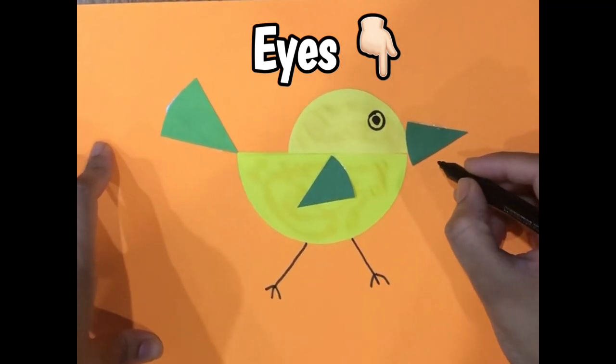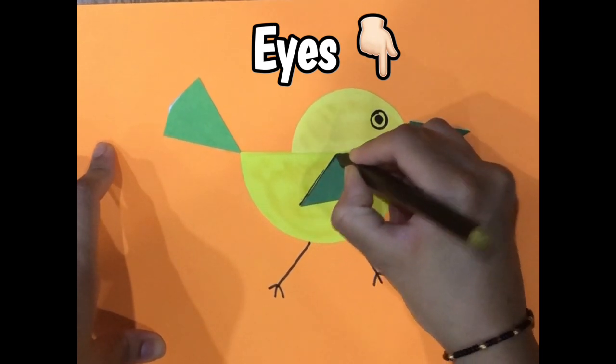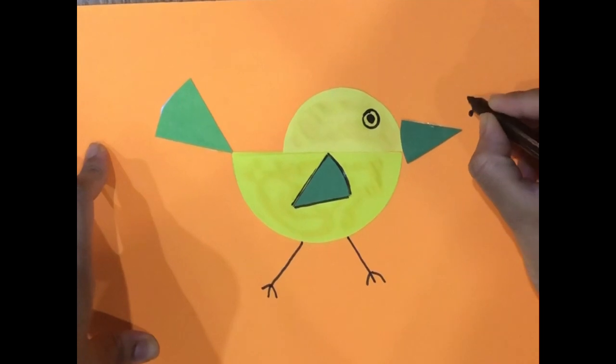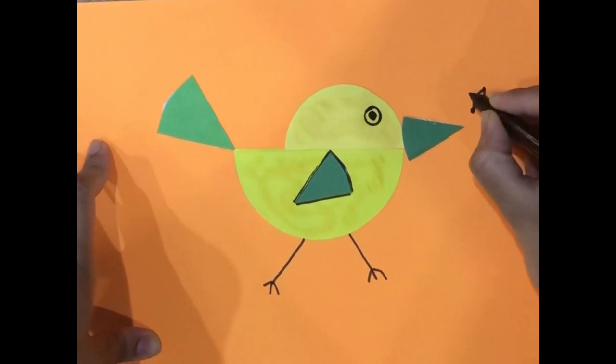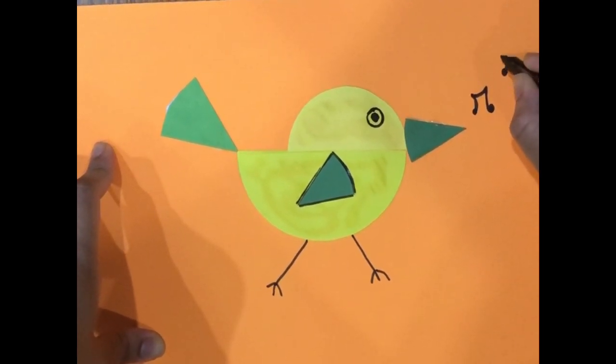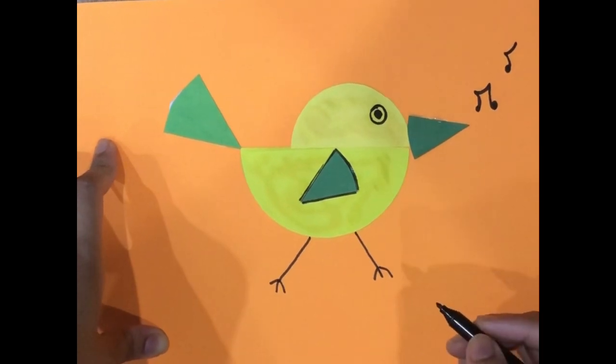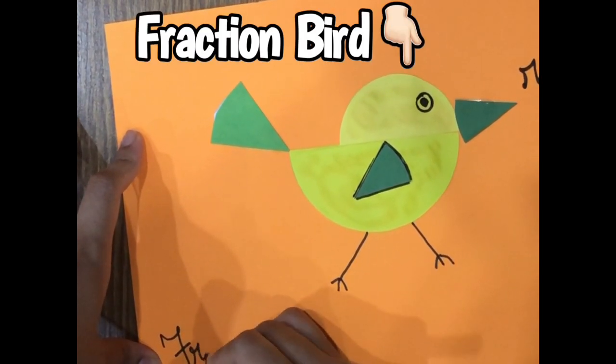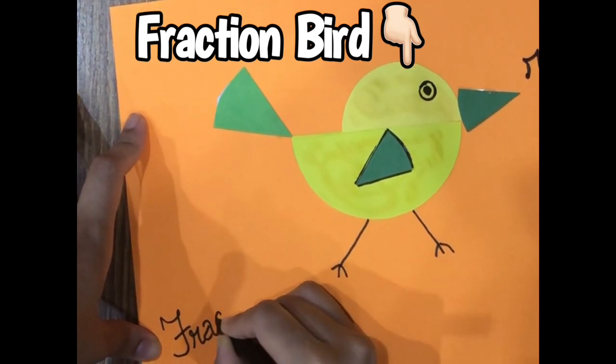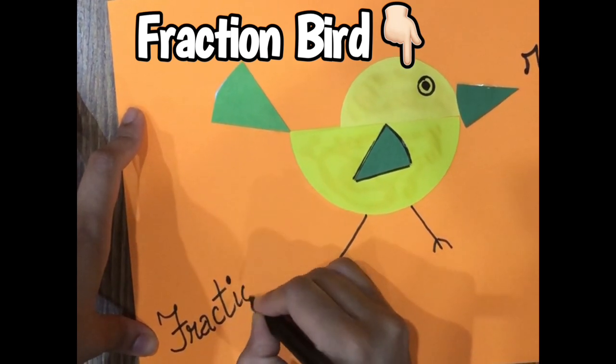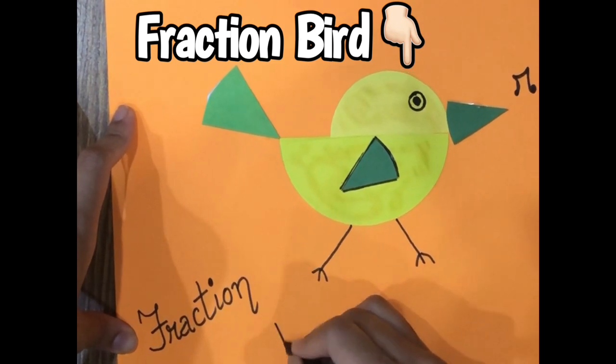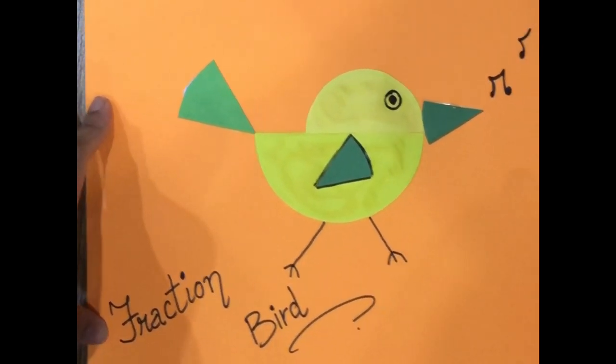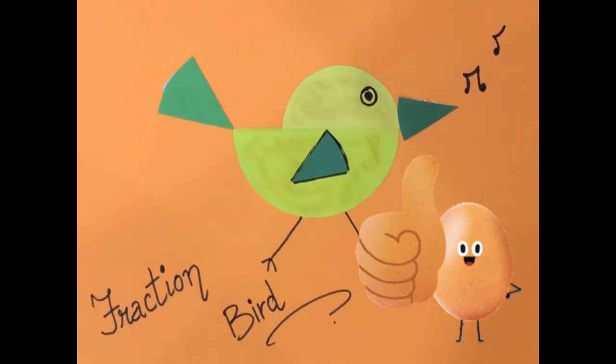You can decorate the bird as per your liking. You can also label the fractions if you like to understand the concept better. You can mention what you have drawn - it's a fraction bird - to illustrate the basic concept involved in fractions using this activity.